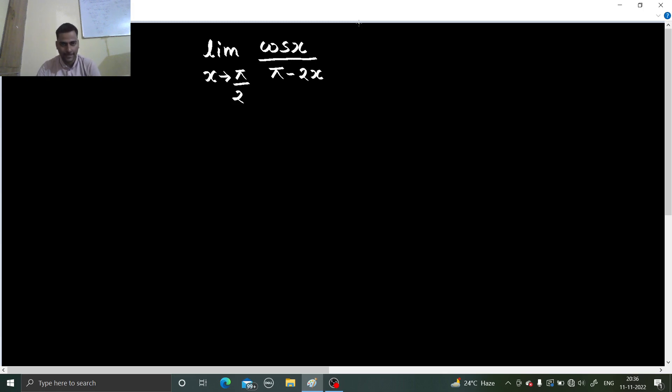Limit x tending to pi by 2, cos x divided by pi minus 2x. Again as we can see our limit is in variable x and this variable is tending to a non-zero quantity which is pi by 2.